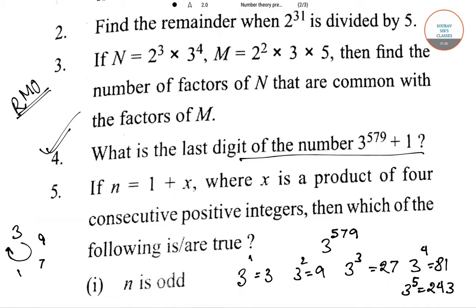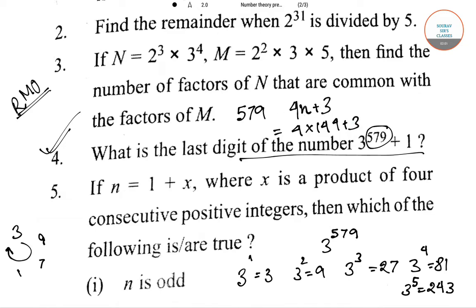If we express the power as 4n plus 0, 1, 2, or 3, we will get to know what the last digit of that number will be. So if we express the number 579, which is in the power of 3, we get 4 into 144, that is 576, plus 3. So we can express 579 in the form of 4n plus 3.